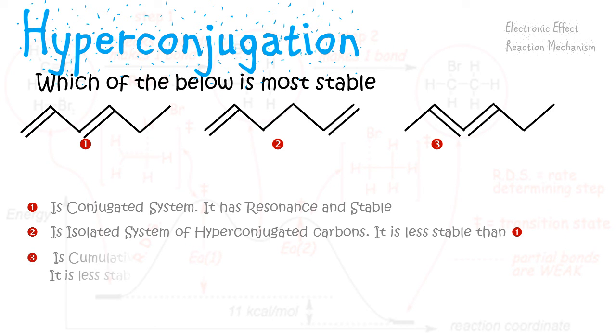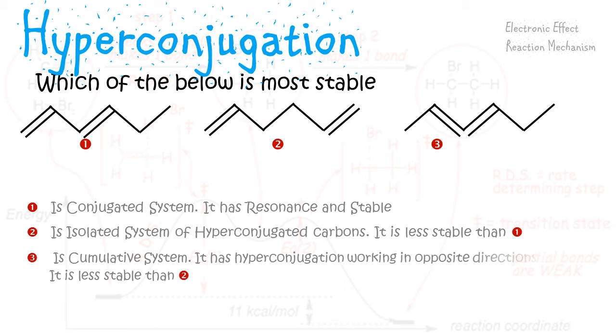In the third case, it's a cumulative system. That means they are working in opposite directions to each other and it has hyperconjugation in opposite directions.